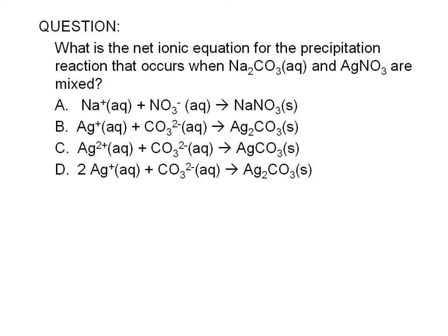What is the net ionic equation for the precipitation reaction that occurs when aqueous solutions of sodium carbonate and silver nitrate are mixed? A precipitate is a compound that is insoluble in water. Therefore, to answer this question, we just need to look for a pair of ions that will form a compound that is insoluble in water. We use solubility rules to predict whether a compound is soluble or insoluble in water.